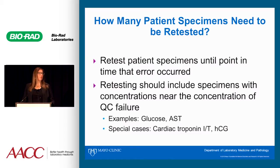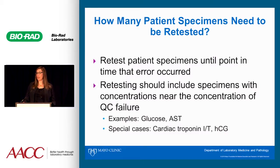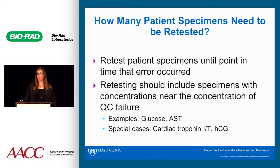Other examples include cardiac troponin T, where perhaps the last 10 samples were all undetectable. I want to go back in time to the point where I had measurable cardiac troponin T concentrations, so that we aren't assuming we discovered the error only because we had a group of patients who did not have an MI.